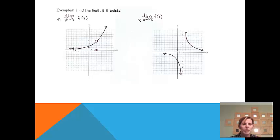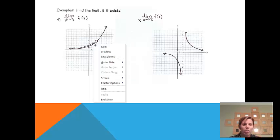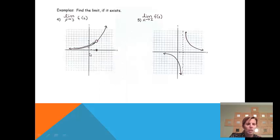So we would like to look as I'm coming in from the left, what y value is the function approaching? And you'll notice, although there's a hole happening at four, it is getting closer to a y value of four. And then when I'm coming in from the right, and I'm looking at what y value I'm getting closer to, again, I'm getting close to a y value of four. So since I am approaching the same number from both sides, the limit of this problem will be four. It actually does exist.